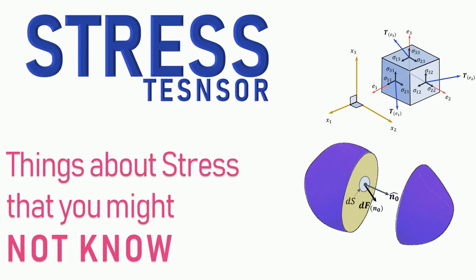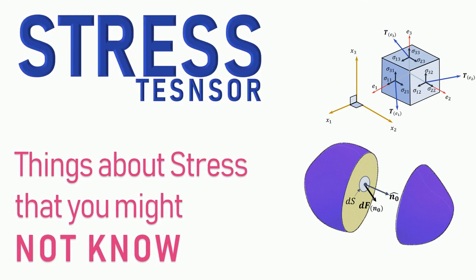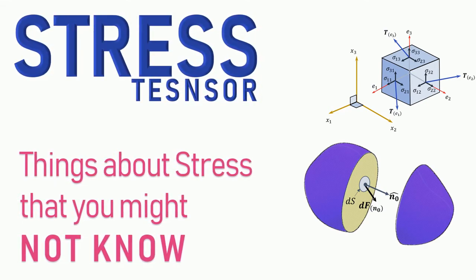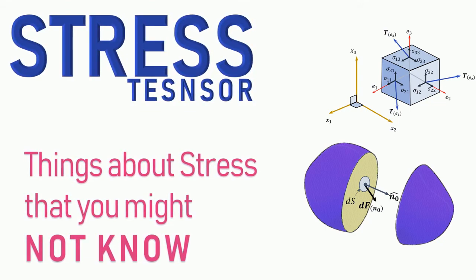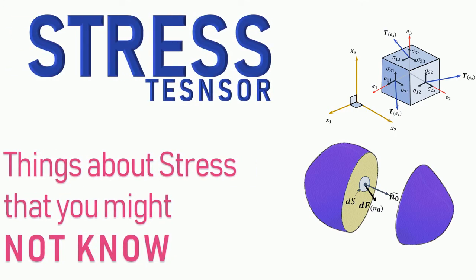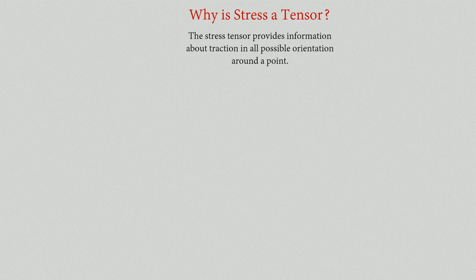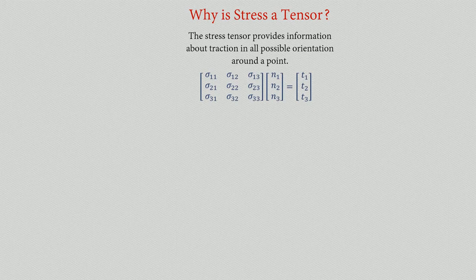In the previous video we tried to get a feel of what tensors are. In this video we are going to discuss the main title of this series: the stress tensor. We have established what stresses are and some properties represented as tensors. Now let us see why stress is a tensor. The stress tensor provides information about traction at all possible orientations around a point. From Cauchy's stress theorem, each component of a tensor requires two directions and a scalar value.